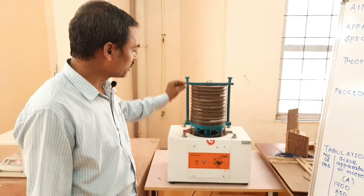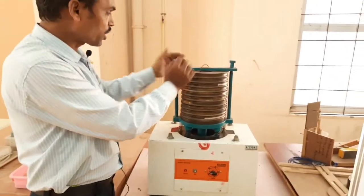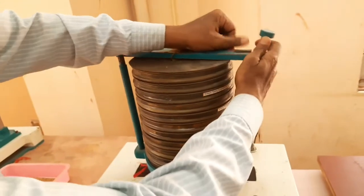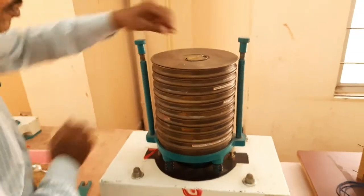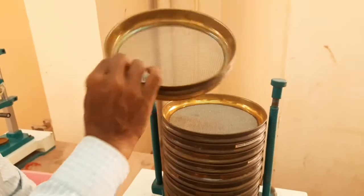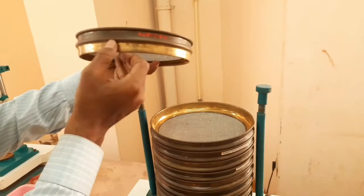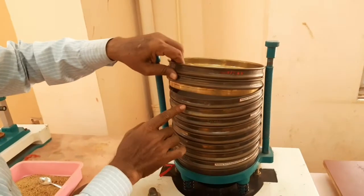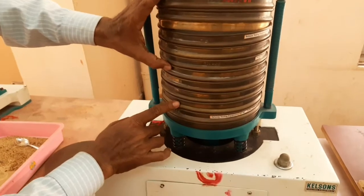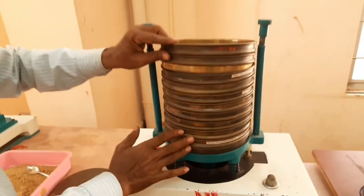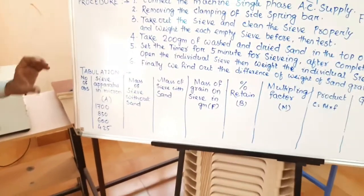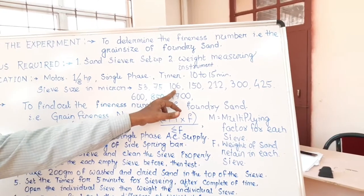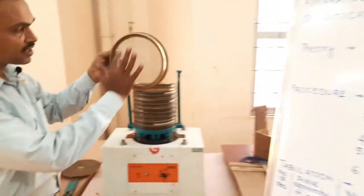Now we go to the machine. These are the individual sieves. Now we open it. This is the top cover and these are the sieves — you can see their sizes. Total number of sieves: 3, 6, 9, 10 — total 10 sieves. The individual sieve sizes are 53, 75, 106, and so on.